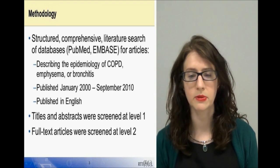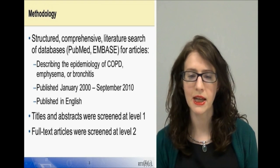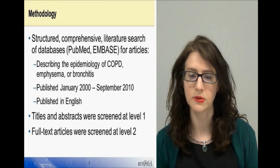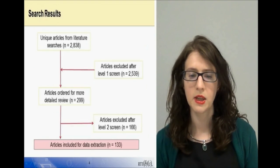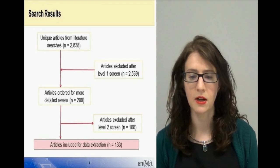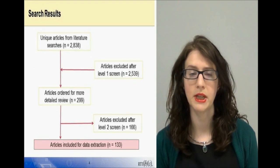Titles and abstracts were screened at level 1 and then, of those selected as relevant, full text articles were screened at level 2 and selected for inclusion in the review. The PRISMA flowchart shows the flow of articles through the screening process.